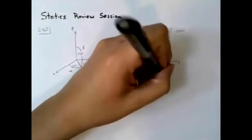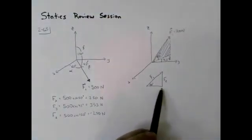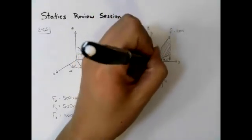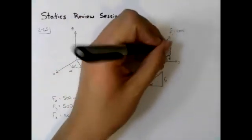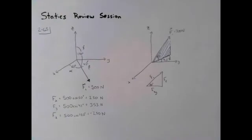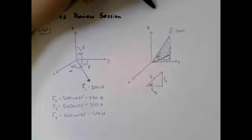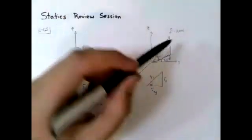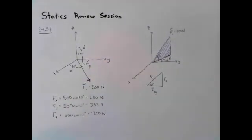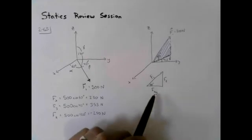This component is essentially what the book calls f prime or what we call in class f of xy which is the projection of the force f along the xy axis. One of my students gave a good analogy of projections. He said that projection was kind of like a shadow of a vector. If you were to illuminate from the top of your z axis down, f of xy would be the shadow of f1 on the xy plane.